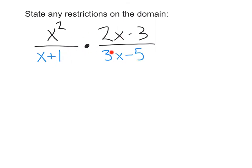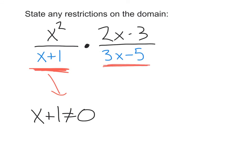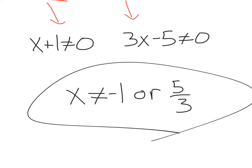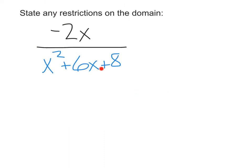In this next one it looks like we have two different denominators to worry about, but we handle it exactly the same way. We know that the first denominator cannot equal 0 and the second denominator cannot equal 0, so we're going to have two different restrictions. Solving these out, we get X cannot equal negative 1 or 5 thirds.